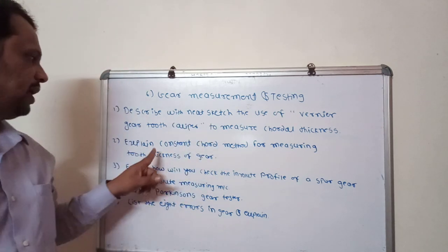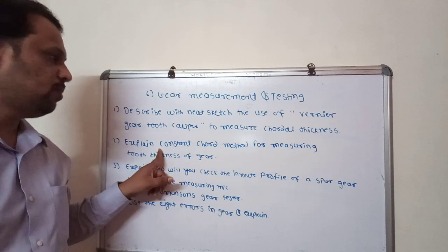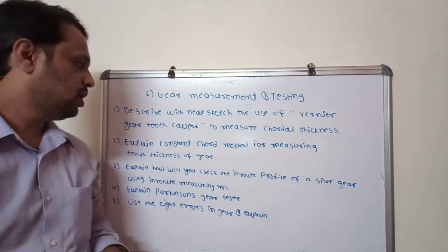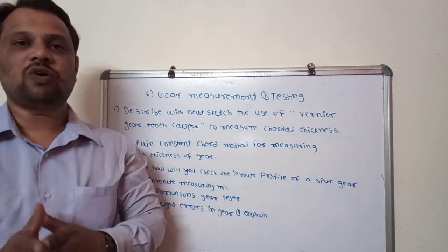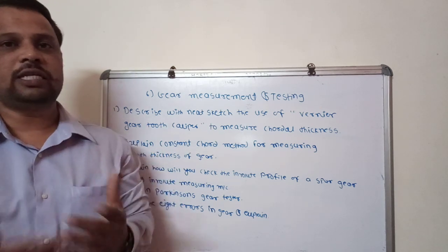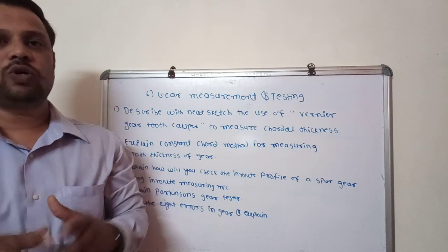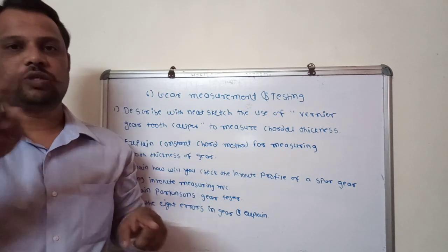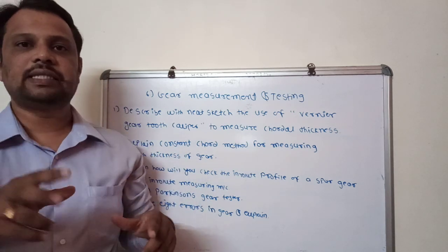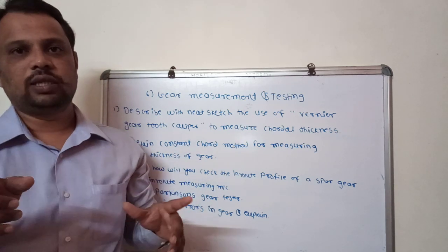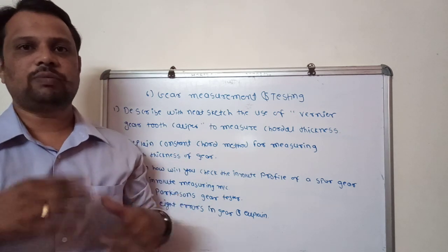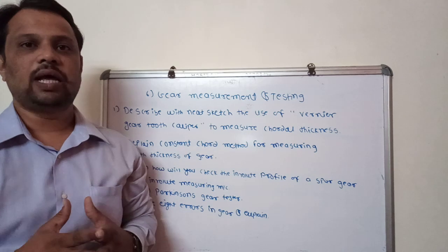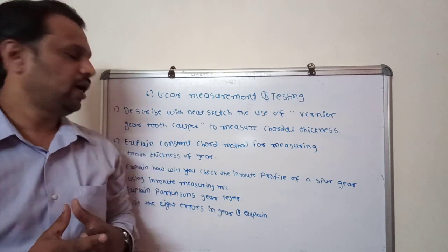After that, explain the constant chord method for measuring tooth thickness of a gear. In this also, you have to draw one gear tooth, draw lines, and explain everything in a somewhat lengthy way.